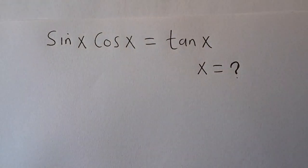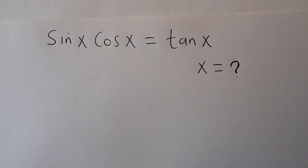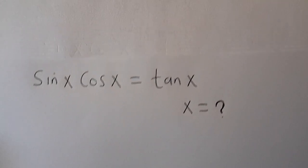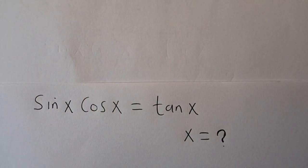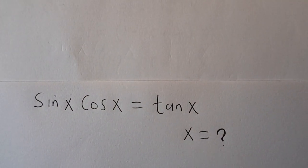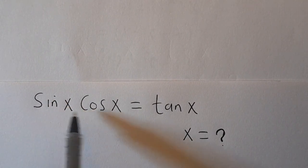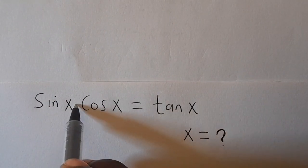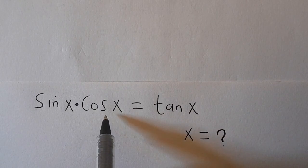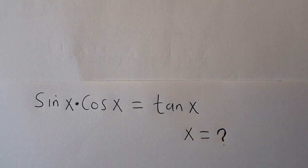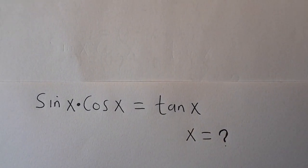Hello guys, you are all welcome back to my YouTube channel. Today we want to find the possible value of x given that sin(x) multiplied by cos(x) equals tan(x). What will be the value of x?